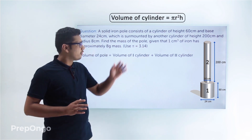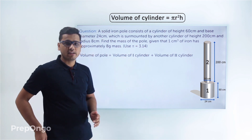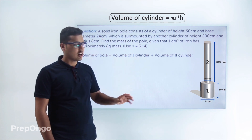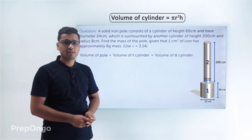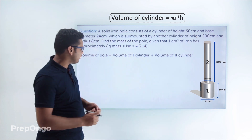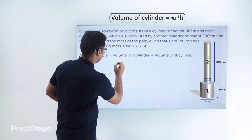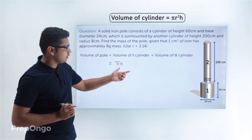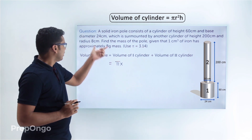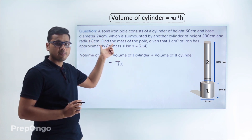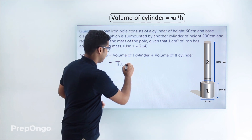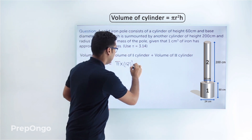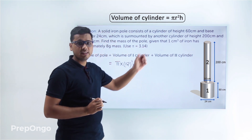The volume of a cylinder is π r² h, and we know the radius and height of both cylinders. For the first cylinder, the diameter is 24 centimeters so the radius is 12 centimeters. The volume of the first cylinder is π × 12² × 60.